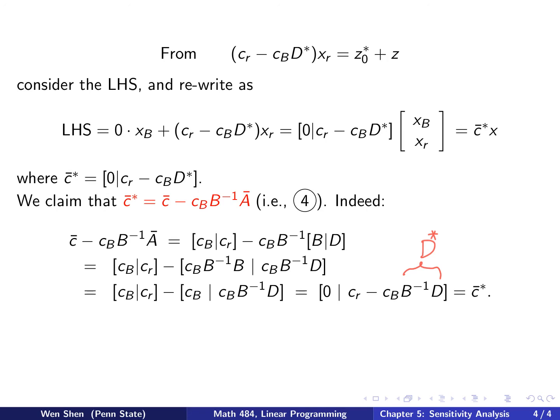Now I perform the subtraction of this vector minus this vector. cB minus cB, so the first m element becomes zero, and the remaining element will be cr minus cB D star. Now we see that B inverse times D is D star, so what is here is exactly c-bar star. We have proved claim number four.